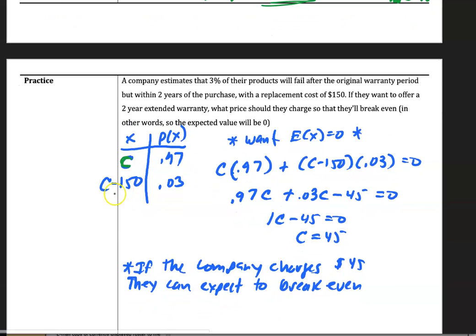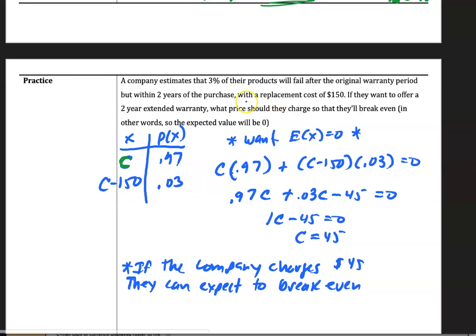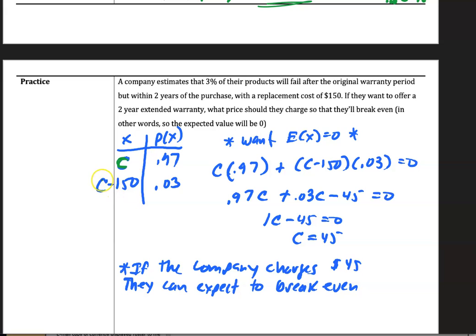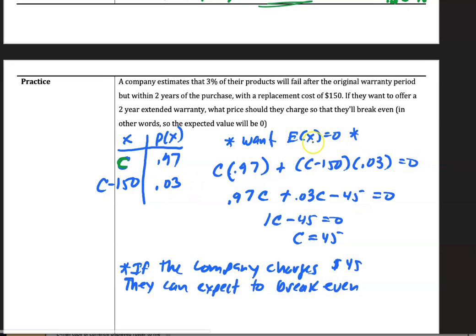And then on the other case, they lose $150 every time someone has to use the warranty. And so whatever they charge minus 150, that's going to happen 3% of the time. We're trying to calculate this. We want their expected value to be zero, meaning they're going to break even.